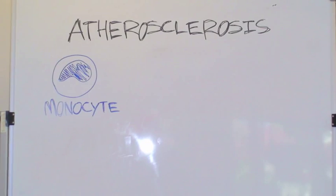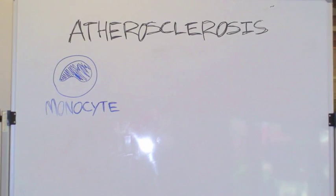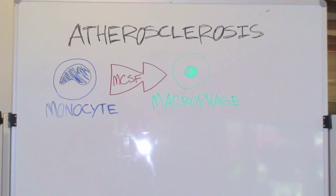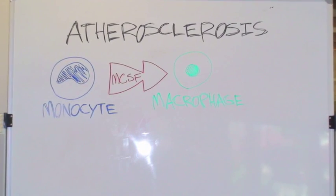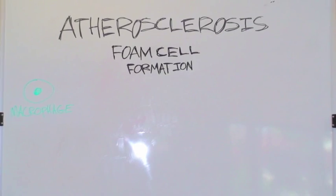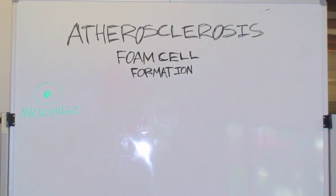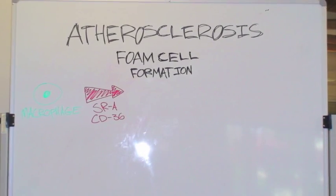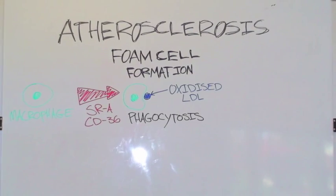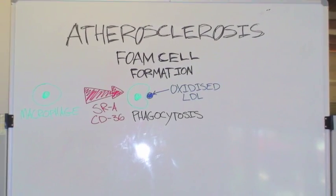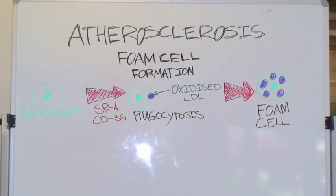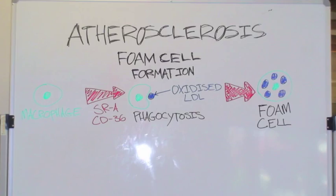The monocytes that have migrated into the intima proliferate and differentiate into macrophages, initiated by macrophage colony stimulating factor and other chemokines. Macrophages then phagocytose the oxidized LDL molecules, mediated by scavenger receptors SR-A and CD-36, leading to foam cell formation. The macrophages appear foamy due to the fact that they cannot break down the lipids which they have engulfed, hence the name foam cells.